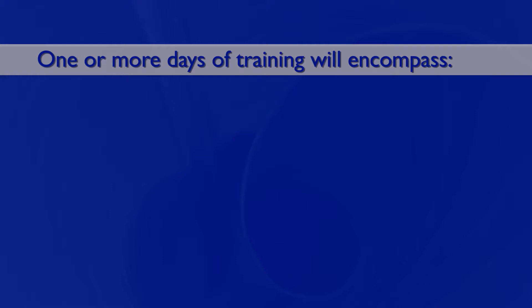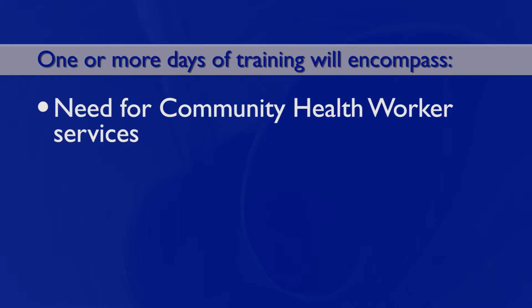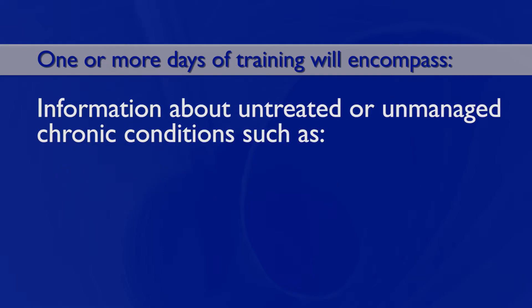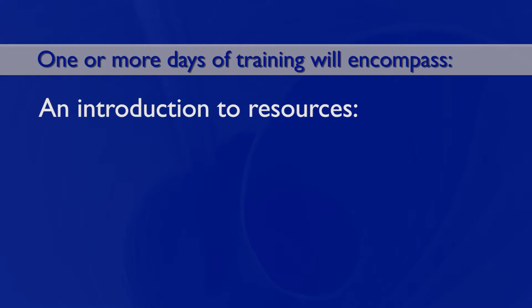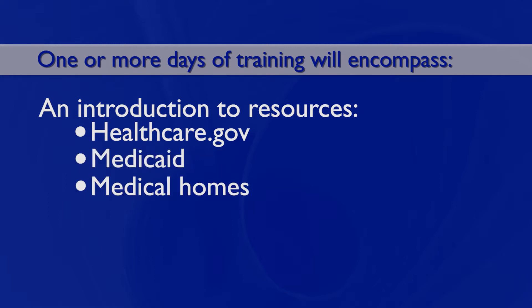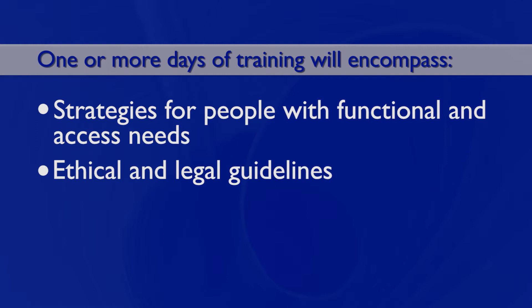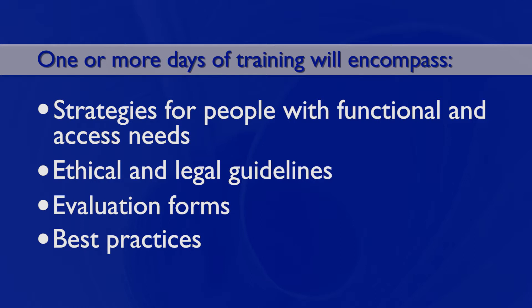One or more days of training will encompass the need for community health worker services and the reality of health disparities among communities that lack healthcare access, information about the complications to individuals who have untreated or unmanaged chronic conditions such as obesity, hypertension, and diabetes. An introduction to resources available to improve healthcare access, such as healthcare.gov, Medicaid, low-cost and no-cost medical homes, and medication cost assistance. Strategies for providing healthcare to people with functional and access needs, as well as the ethical and legal guidelines for community health worker service provision. Trainees will also be familiarized with evaluation forms designed to measure the impact of their services and educated on best practices of service provision and how to follow up on those services.